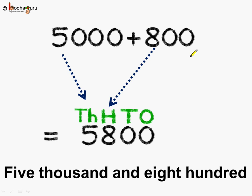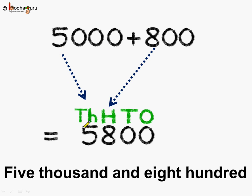How do we write this in standard form? Start putting the numbers in their correct place. There are no ones, so put 0 at the ones place. There are no tens, so put 0 at the tens place. How many hundreds? 8 hundreds, so put 8 at the hundreds place. Lastly, there are 5000, so put 5 at the thousands place. What do we get? 5,800.